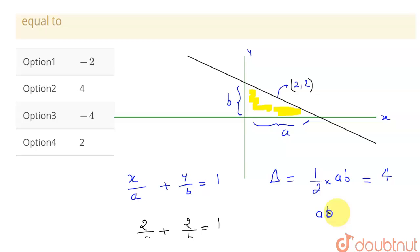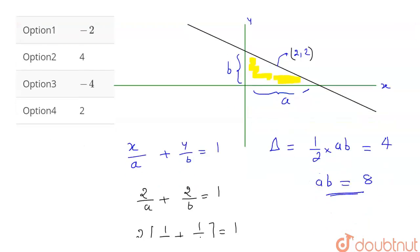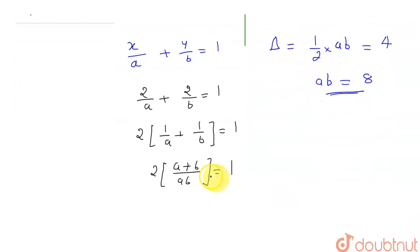So, it implies that the value of ab is 4 into 2, which is 8. So, we have found the value of ab which is equal to 8. So, let me substitute it here.